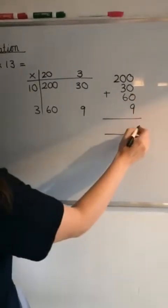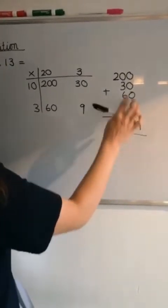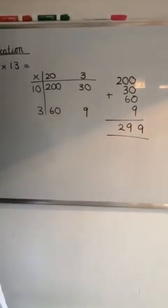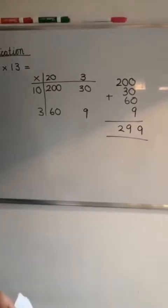So we've got 9 in this column, 3 add 6 which gives us 9, and 2. So we should have had 299 for that question.